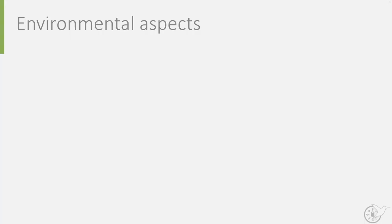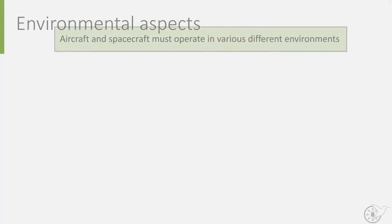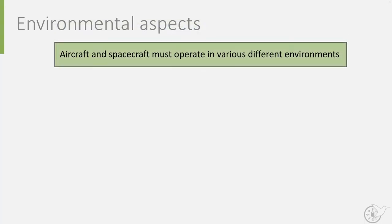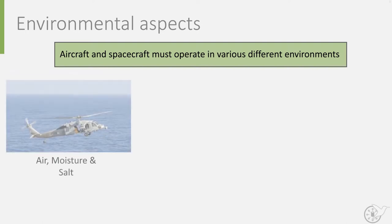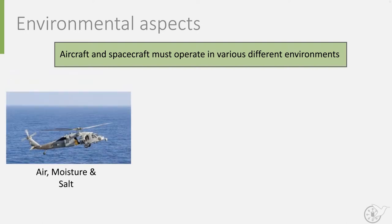So what does the environment do to aircraft and spacecraft structures and materials? Aircraft and spacecraft operate in many different environments, each of which has its own effects on the materials we use. You can think here of a helicopter operating search and rescue missions overseas, meaning that the air is filled with moisture and salt.